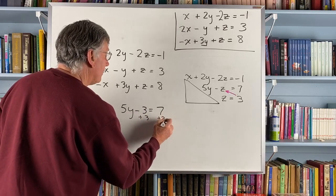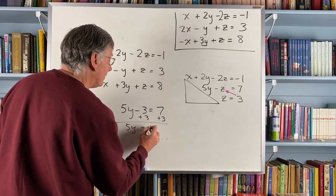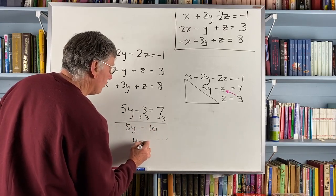Add 3 to both sides and I get 5y equals 10, y equals 2.